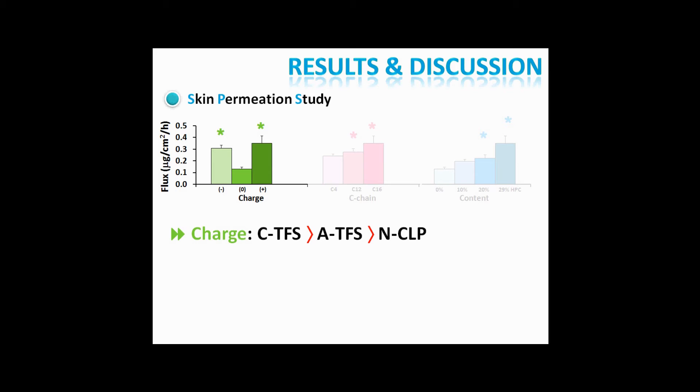The surfactants in both transfersomes can open the dense keratin structures in corneocytes and swell the stratum corneum and interact with the intercellular keratin, thus increasing the skin permeation of the drug.